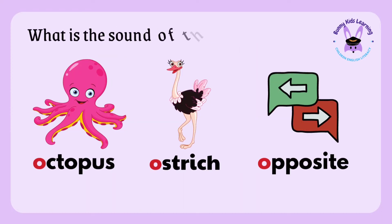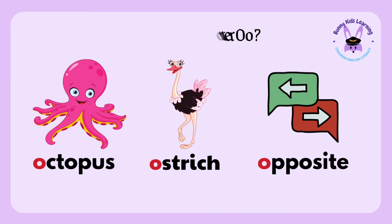What is the sound of the letter O? You're right! The sound of the letter O is O. O-O-Octopus. O-O-Ostrich. O-O-Opposite.